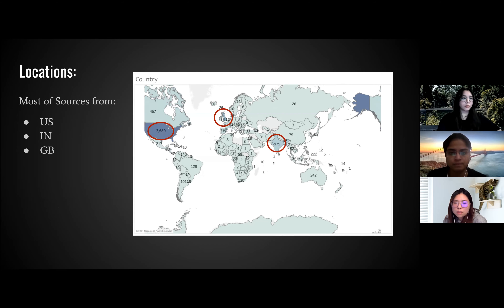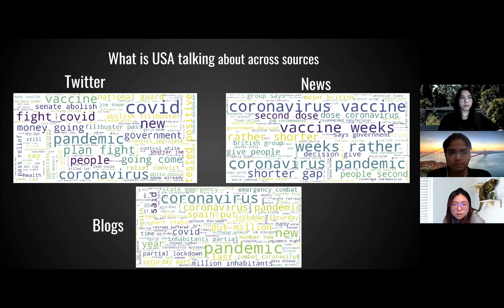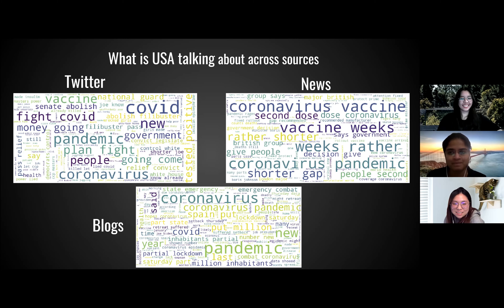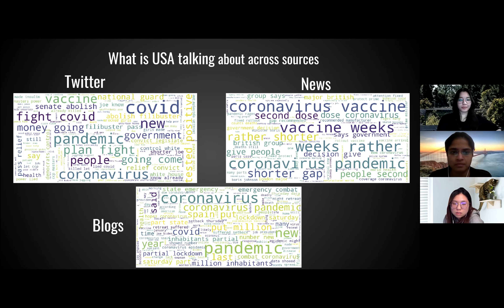However, we found out that around 4,700 data points have a null value in the attribute of country. We can see the change across the world across different sources, which helps us understand the severity using term frequency.